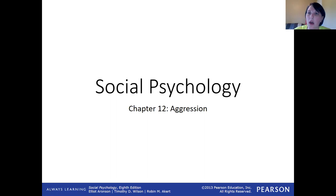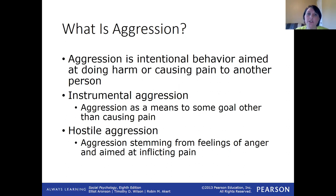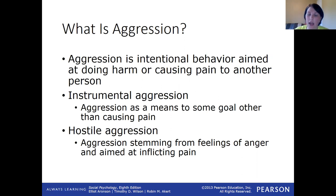So let's talk about aggression. What is aggression? The important thing to consider is that aggression is intentional behavior — it's not something accidental. It's not like you trip over somebody and hurt them. Aggression is intentional behavior where your aim is to actually hurt someone, cause pain, or do harm to someone else.